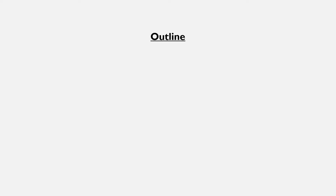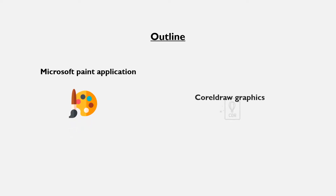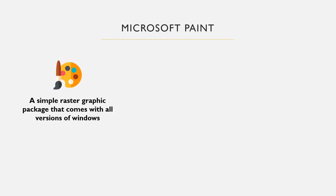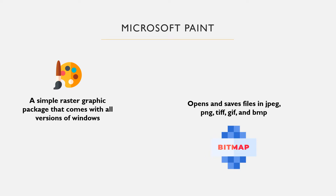In this tutorial we shall discuss the features of two popularly used graphic packages. We'll talk about Microsoft Paint, which represents a raster painting application, and CorelDRAW, which represents a vector application. Microsoft Paint is a simple painting graphics application that comes with all versions of the Windows operating system. It can be used to scan images and also create and modify objects. It can open and save files in the following formats: JPEG or JPG, GIF, PNG, TIFF, and bitmap formats.